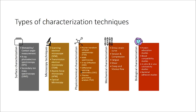There are predominantly five different types of characterization techniques. For surface characterization, there are many techniques available, but the widely used ones in the biomaterial field include wettability or contact angle measurement, which determines whether a material surface is hydrophobic or hydrophilic. Hydrophobic means water-repelling and hydrophilic means water-attracting.